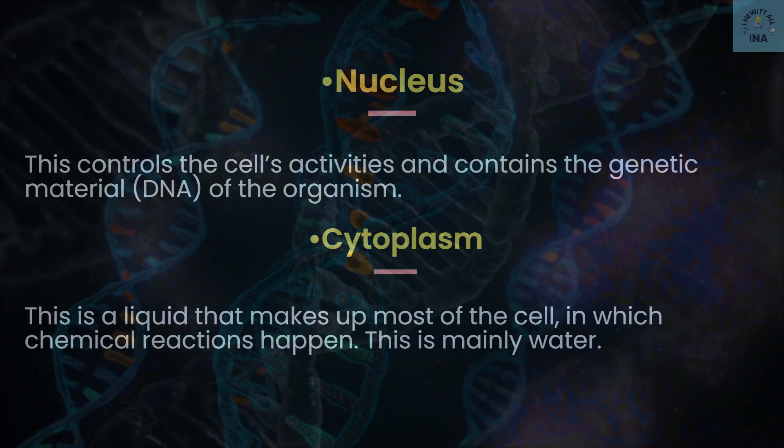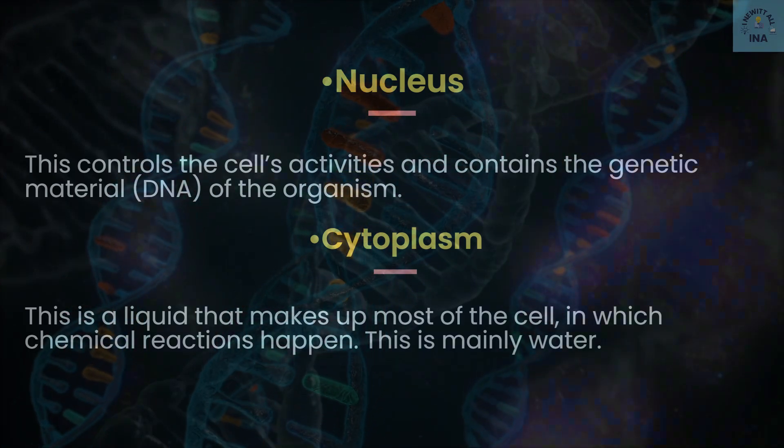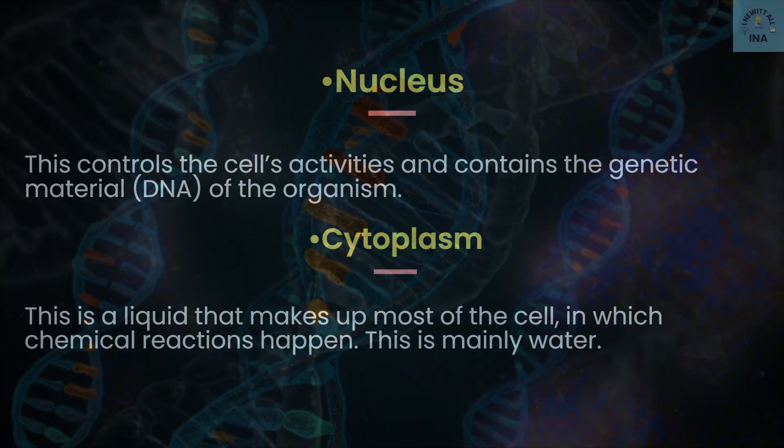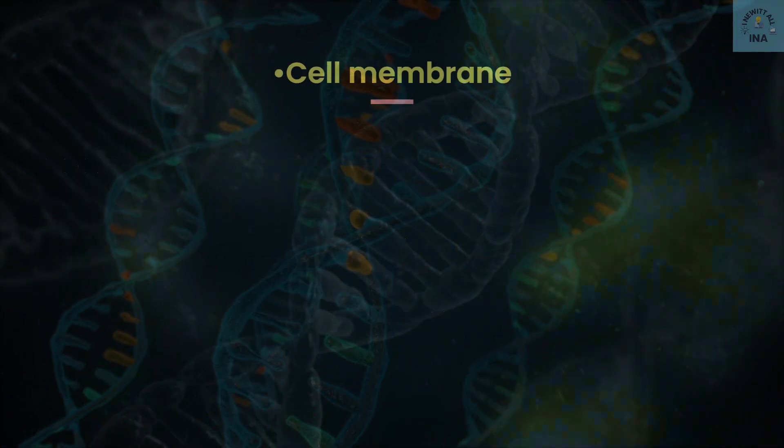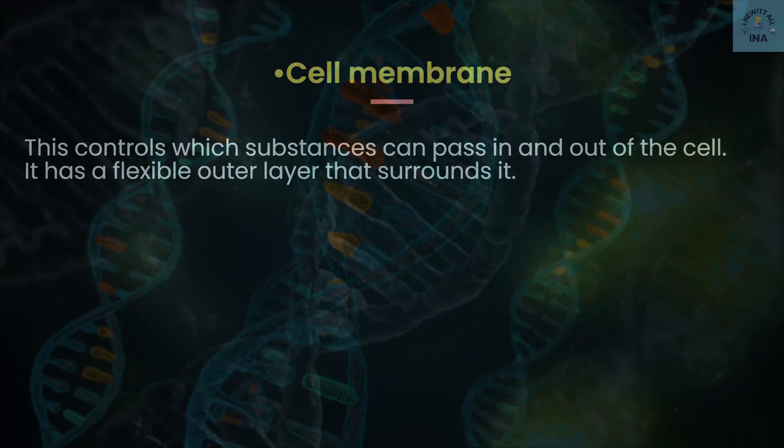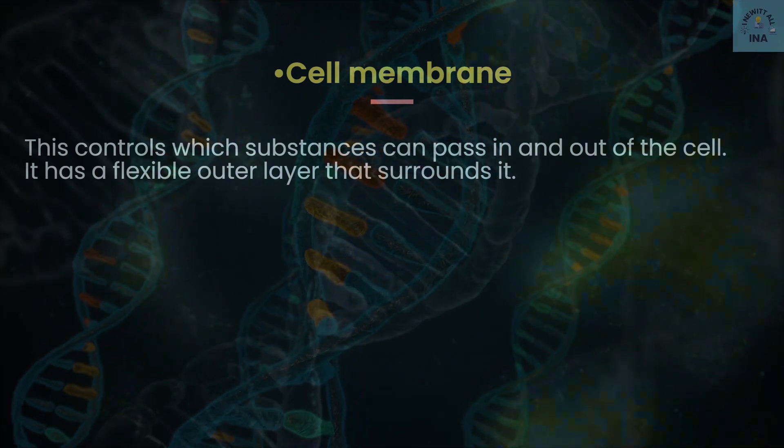Cytoplasm: this is a liquid that makes up most of the cell in which chemical reactions happen. This is mainly water. Cell membrane: this controls which substances can pass in and out of the cell. It has a flexible outer layer that surrounds it.